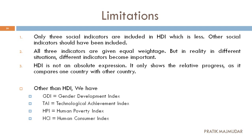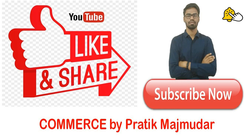We have discussed everything related to this chapter: starting with economic growth, economic development, and their differences; then the four indicators — first, growth rate of national income; second, growth rate of per capita income; third, improvement in quality of life and PQLI (Physical Quality of Life Index); and fourth, Human Development Index (HDI). I hope you don't have any doubts. If you do, please mention them in the comment section.